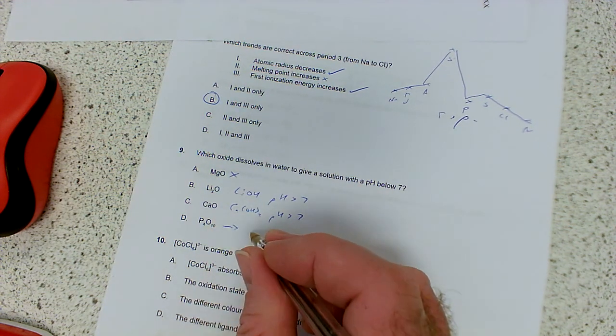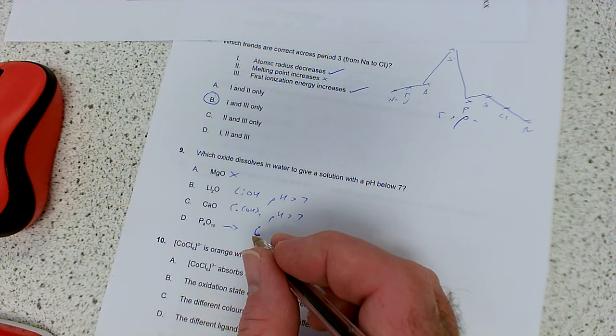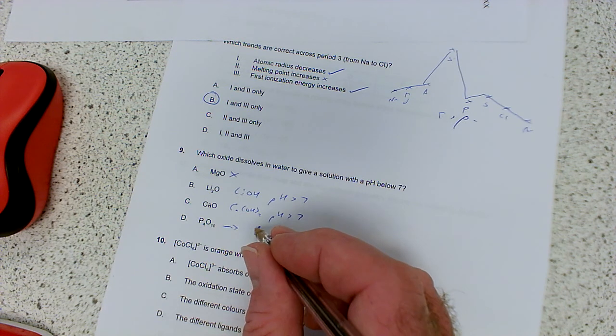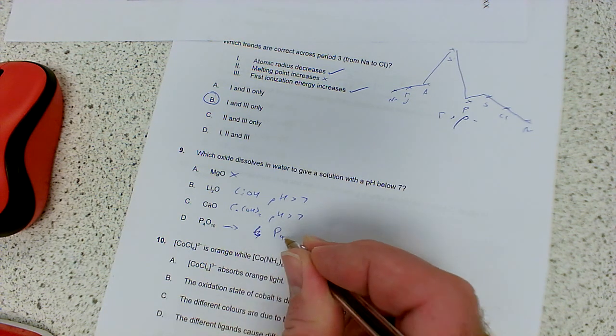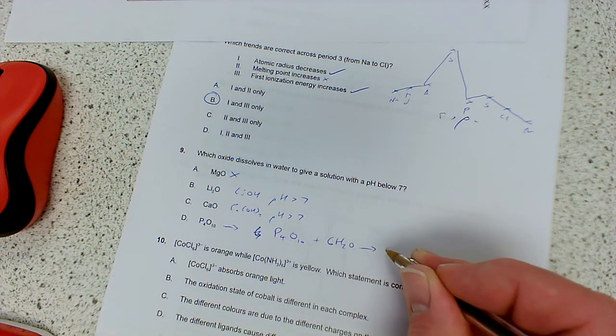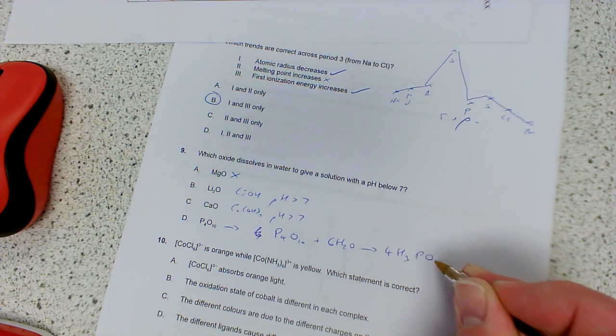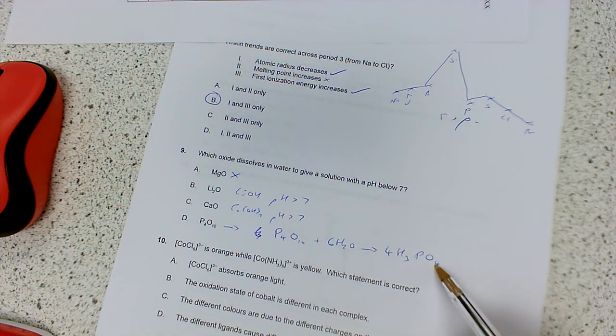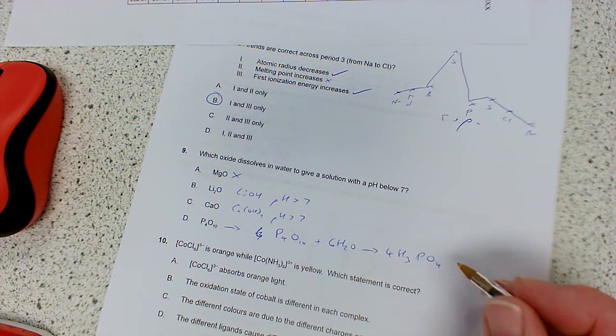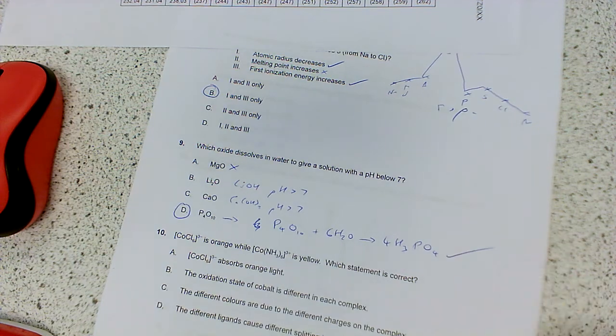That would give phosphoric acid, basically, which way you'd get, I don't know if I remember to balance it now. I think it's P4O10, react to something like 6 waters, and then gives you something like 4H3PO4s. Is that balanced? 16, 6, 10, 12, 12, yeah. So, yeah, and that's phosphoric acid, basically, so you'll have a pH below 7. So, that's the one we want. And then the last one, number 10, then.